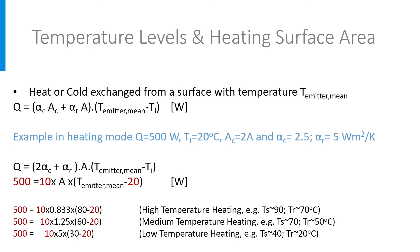In the second example, the radiator has an average temperature of 60 degrees. That could be a supply temperature of 70 degrees and a return temperature of 50, leading to a surface area of 1.25 square meter. And in the last example, the radiator temperature is only 30 degrees on average, corresponding to a supply at 40 and a return at 20 degrees, leading to a surface of 5 square meter.